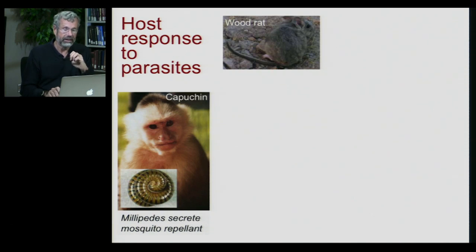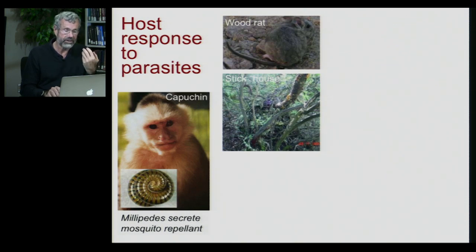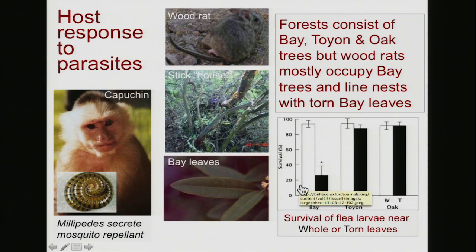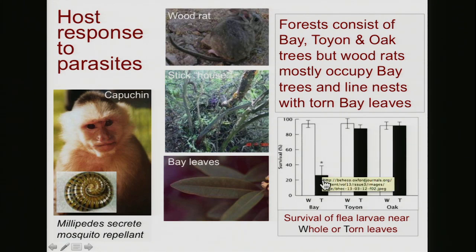Closer to home, here's the wood rat, quite common in California. The wood rat makes houses out of sticks in California forests. The forests where it lives consist of three different species of tree — bay, toyon, and oak — but wood rats really seek out the bay trees; that's where they build their nests. As they're building their nests, they line them with bay leaves, and not only that, but they tear the bay leaves. It turns out that if you look at the effectiveness of torn bay leaves on fleas, the flea larvae can't survive. The bay leaf is a natural fumigant — the wood rat has an insecticide that it uses.